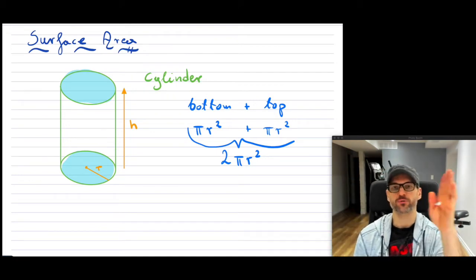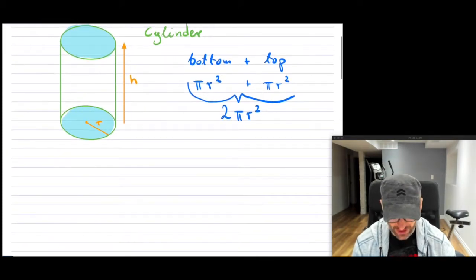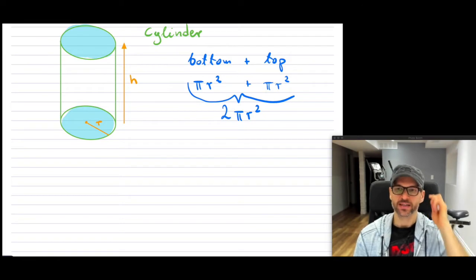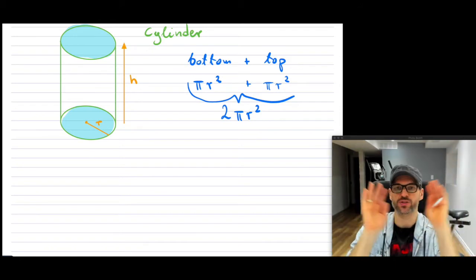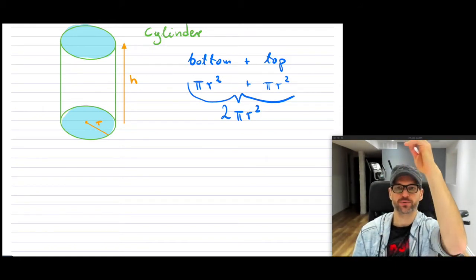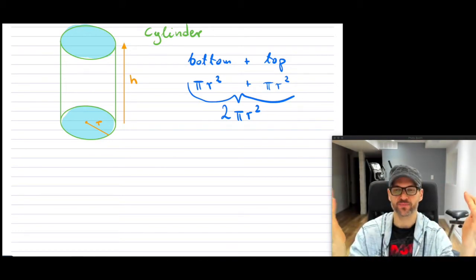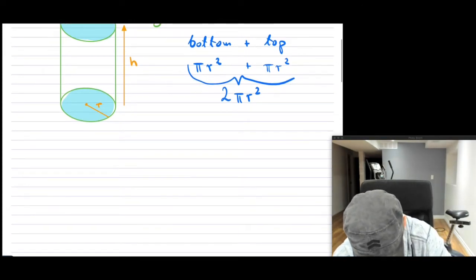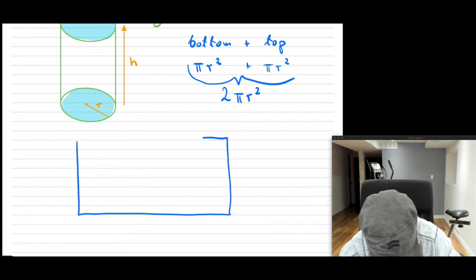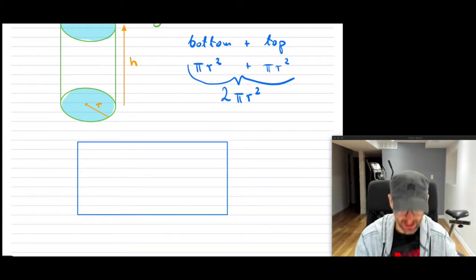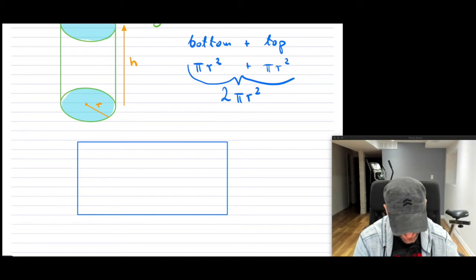Now, what about the wrapping all the way around? We know the height of a cylinder. Let's cut it — let's take away the bottom, take away the top, so we just have the wrapping, and cut it straight up along the H all the way up. If we do that and then unwrap it, what you're going to have is basically a rectangle. You can take that rectangle and wrap it back up.